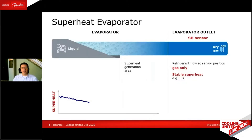Here's an explanation why that is. We look at an evaporator here. The evaporator is filled with a mixture of gas and liquid that evaporates in the evaporator. At the end of the evaporator, we have an area where we generate the superheat. In this case, gas leaves the evaporator — dry gas leaving the evaporator — with a stable superheat of, let's say, 5 Kelvin.